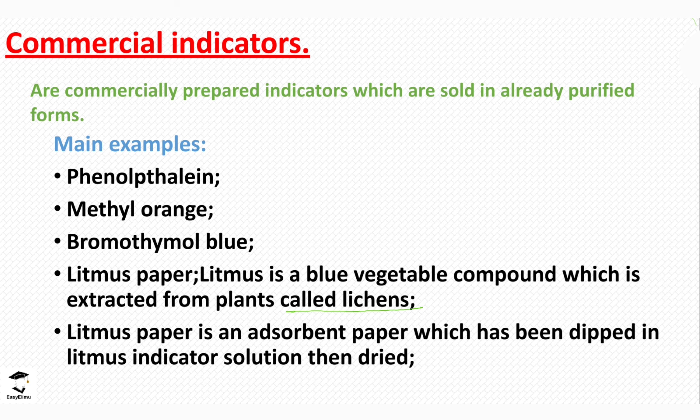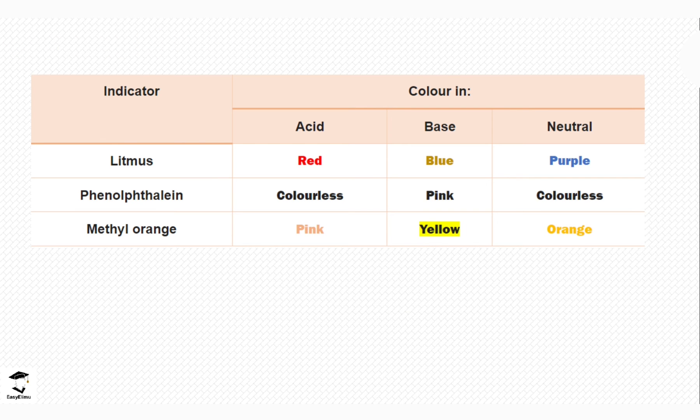When these substances are added to solutions of acids, bases, and neutral solutions—remember at the beginning of the lesson we talked about examples of acids, both mineral acids and organic acids—if these commercial indicators were placed in different acids, different bases, and different neutral solutions, what are some of the colors that would be produced?